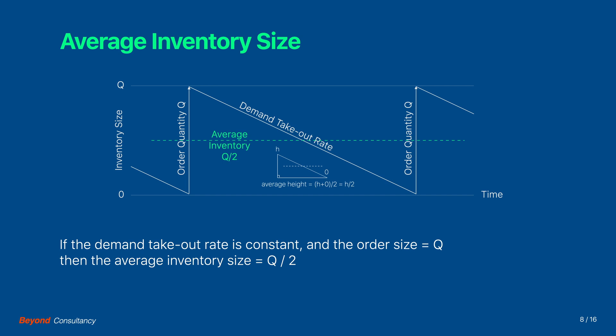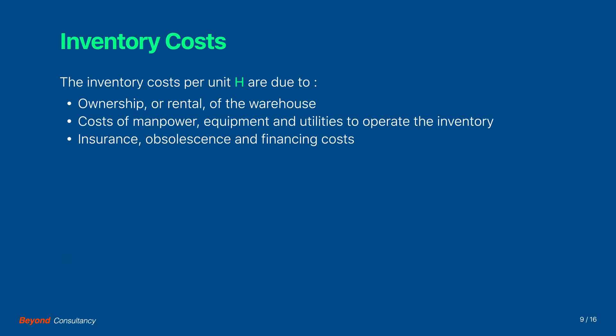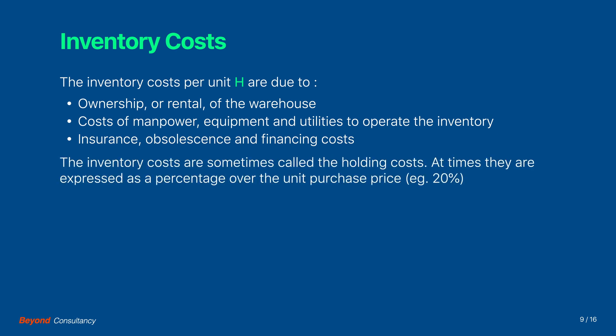This can be illustrated by considering a right-angled triangle with an average height of Q divided by 2. The inventory costs per unit, denoted by capital H, are related to the cost of ownership or rental of the warehouse, the cost of manpower, equipment and utilities to operate the warehouse, and lastly the insurance, obsolescence and financing costs. The inventory costs are sometimes called the holding costs.